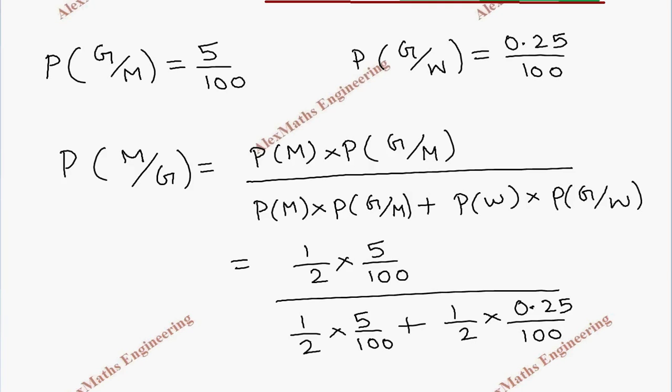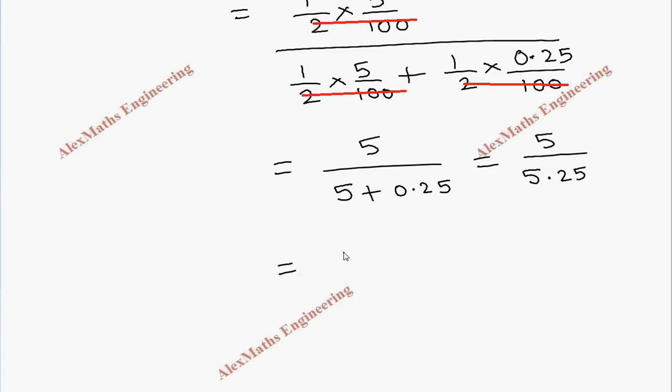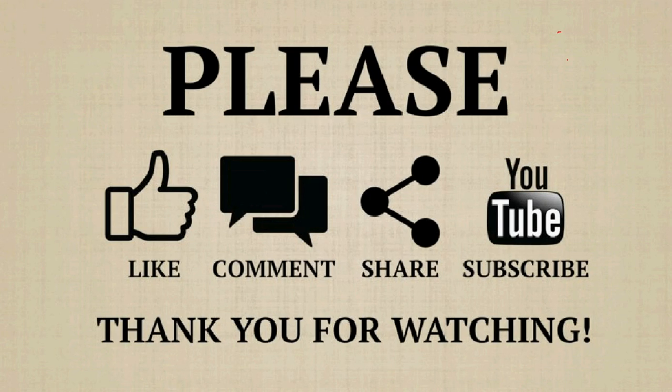So we can cancel the common terms which present everywhere. And after this, the remaining number, if I simplify, it is 5 by 5 plus 0.25. So 5 by 5.25. You can move 2 decimal places by multiplying 100 in both numerator and denominator. So this is 500 by 5.25. If I cancel with 25 table, it is 20 and this is 21.